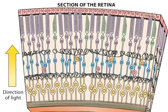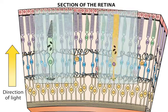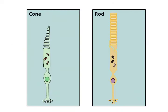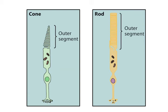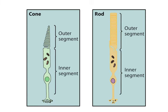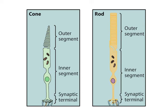The retina contains two types of photoreceptors: rods and cones. Both types have an outer segment composed of membranous discs containing light-sensitive photopigments. Each also has an inner segment that contains the cell nucleus and gives rise to synaptic terminals that contact bipolar and horizontal cells.